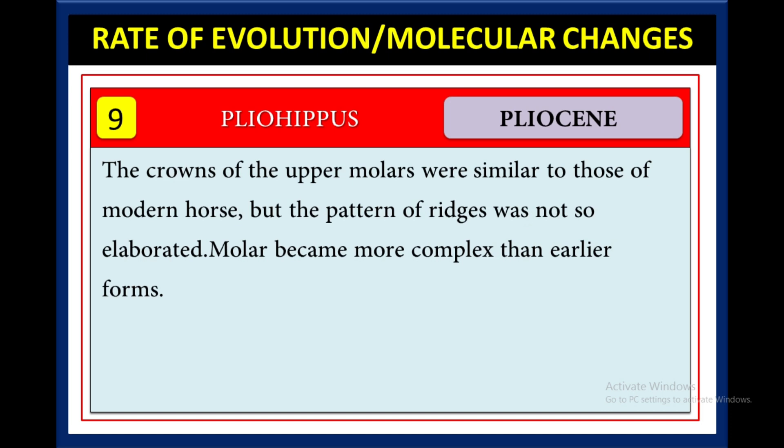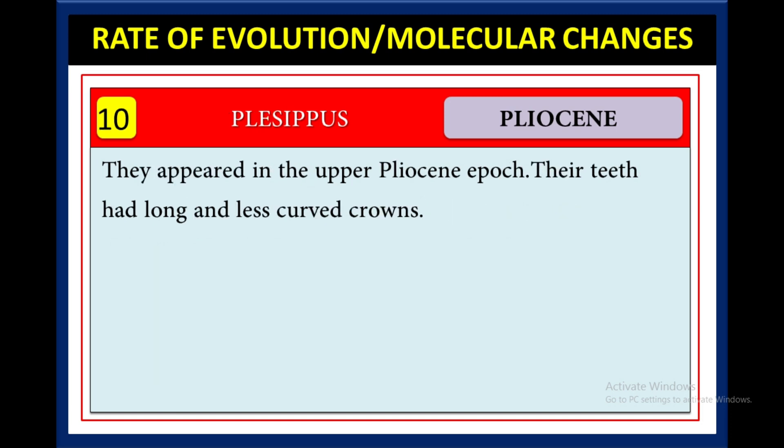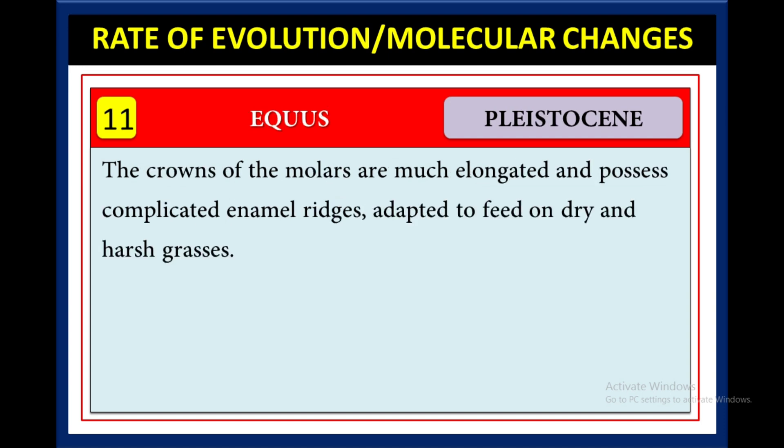In the Pliocene, Pliohippus came. The crown of the upper molars were similar to those of the modern horse, but the pattern of ridges was not so elaborated, and molars became more complex than earlier forms. Then Plesippus appeared in the upper Pliocene epoch — their teeth had long and less curved crowns.